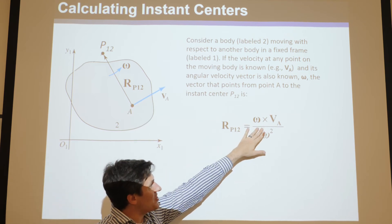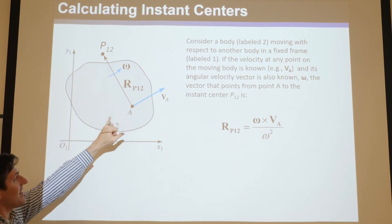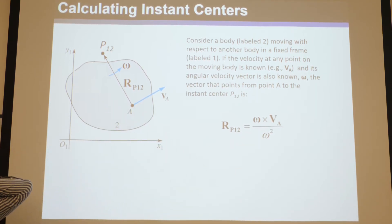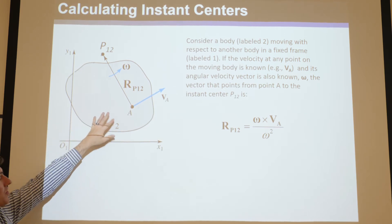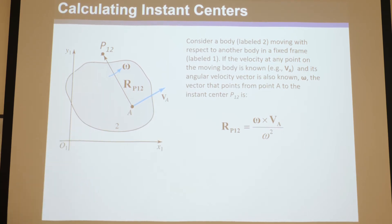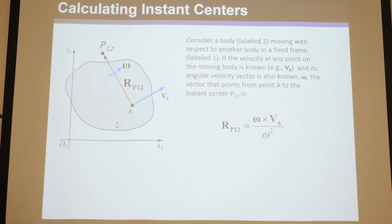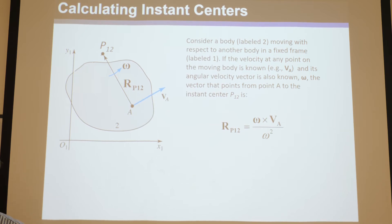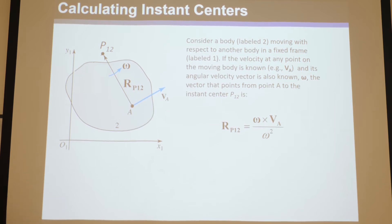If you use this equation, you can find the instant center of that body two with respect to the fixed body ground here. And remember, if the other body's moving, this is all just apparent velocities. But this is a very useful equation.